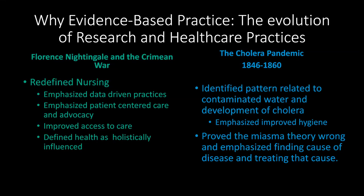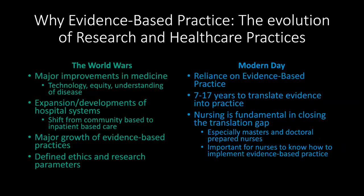From the cholera epidemic to the world wars, we see major improvements in medicine and technology, better access to healthcare, and greater understanding of disease — moving closer to modern practices. We also see the expansion and development of hospital systems, shifting from community-based and home care to inpatient-based care. There was a huge growth of evidence-based practices and access to and expansion of research. Another key outcome of the world wars was defining research ethics and parameters, which is really important when looking at how and why research is conducted.